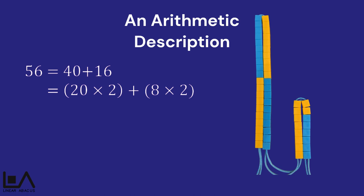40 is modelled as a 20 by 2 array, and 16 is modelled as an 8 by 2 array. In the number sentence, I used brackets to show what I would do first on the linear abacus.